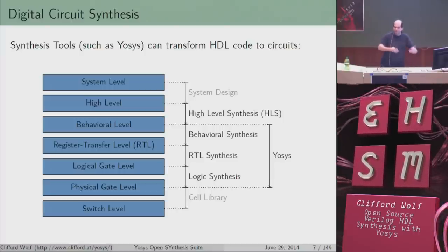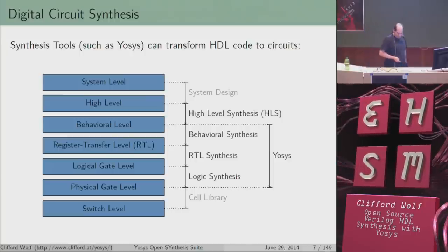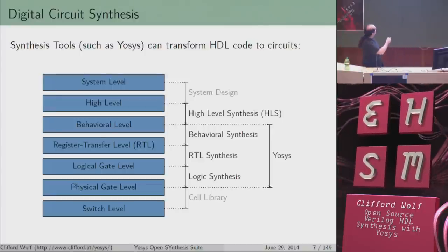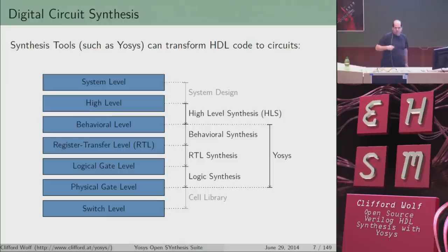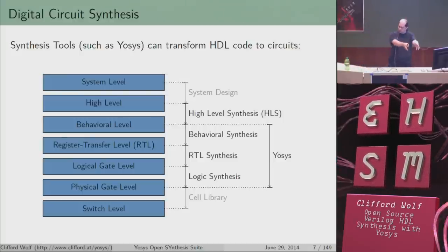You can also write a high-level description in C and use a high-level synthesis tool to automatically generate Verilog from that, then use a synthesis tool to go further. Yosys makes this transformation from a Verilog file to the physical gate level. The transition from physical gate level to individual transistors is then performed by a cell library provided by the fab you want to use to fabricate your chip — for example, describing what transistors make up a NAND gate.